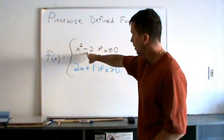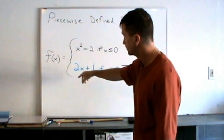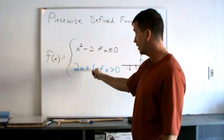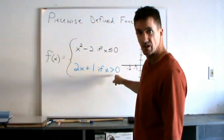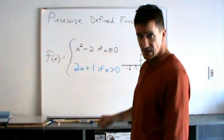This function y equals x squared minus 2 only exists for x less than or equal to 0, and the same function 2x plus 1 is the second piece and it only exists if x is greater than 0.